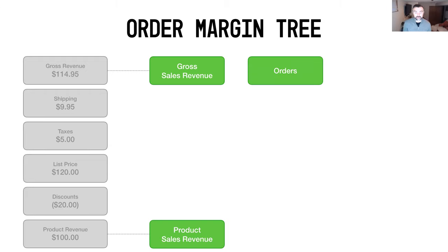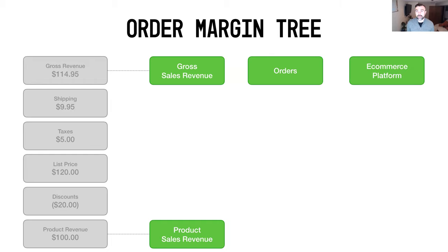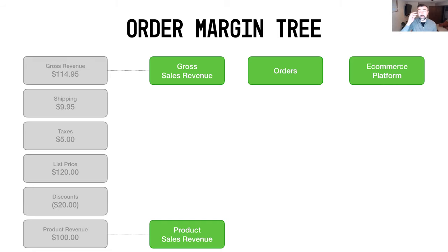We're also going to look at your orders and bring those into the equation, because we need orders to understand some of your payment processing charges, as well as charges that may be linked to the sheer volume or velocity of orders and shipments going out in a given day, week, month, or year. Along the right-hand side, we're going to look at all the different elements that make up your order margin tree, starting with your e-commerce platform and what it costs to run it. That's everything from the shopping cart to the order management system, warehouse and fulfillment systems, sales and marketing tools, and CRMs. We include these because without those tools, you wouldn't be able to generate or take in orders.